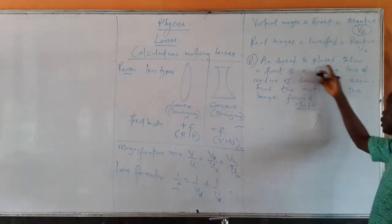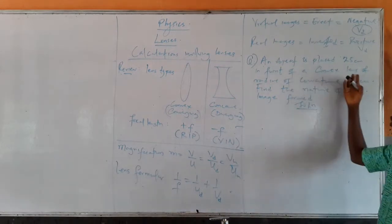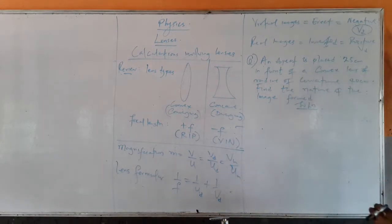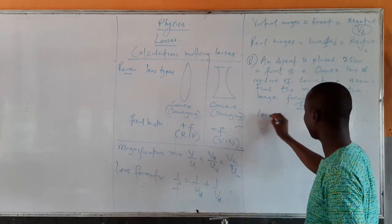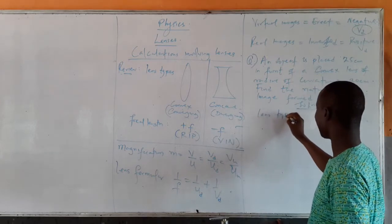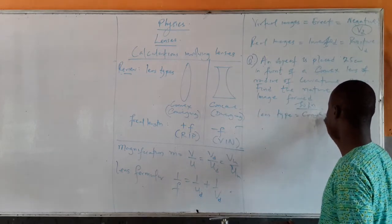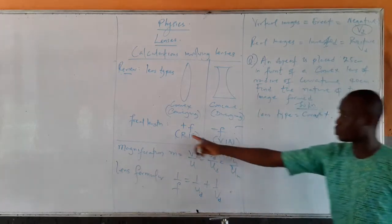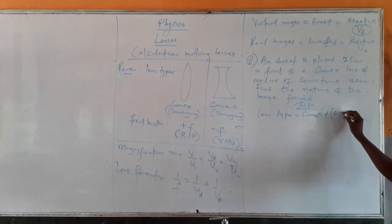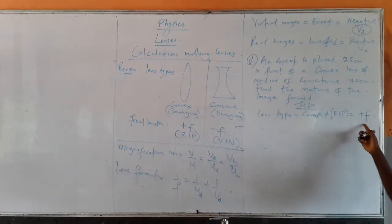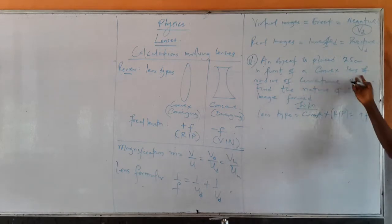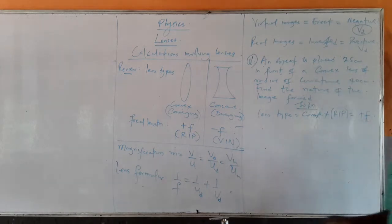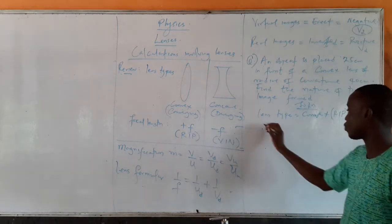We are given an object placed 25 cm in front of a convex lens. The lens type is convex, which means we are using RIP and dealing with positive F. That is the first step — state the lens type. The next thing is to state the focal length of the lens.